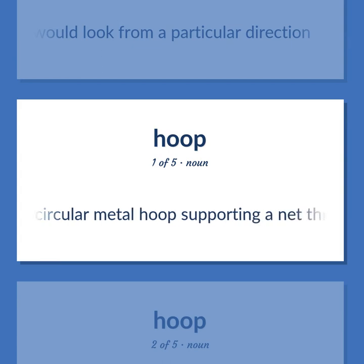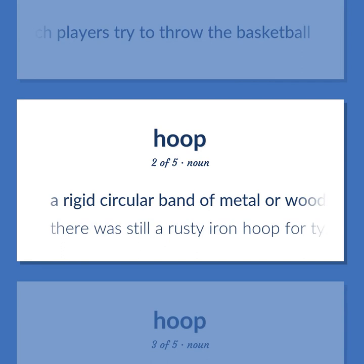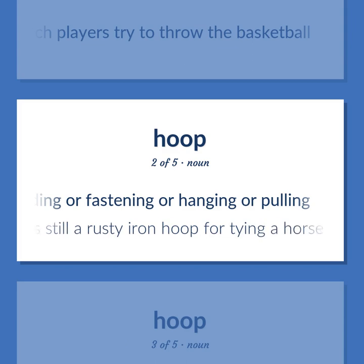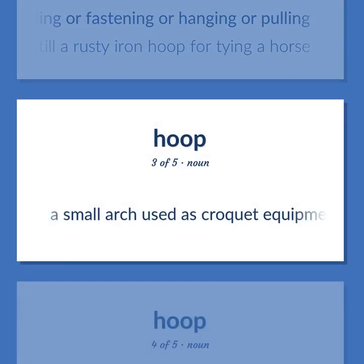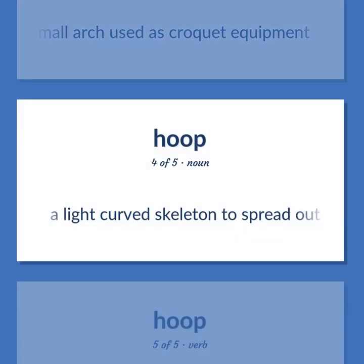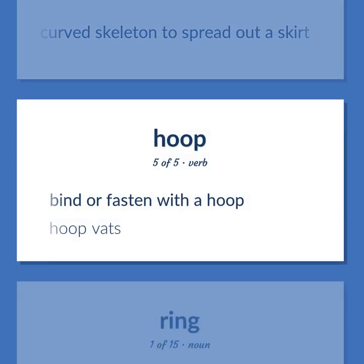HOOP: A horizontal circular metal hoop supporting a net through which players try to throw the basketball. A rigid circular band of metal or wood or other material used for holding or fastening or hanging or pulling — 'there was still a rusty iron hoop for tying a horse.' A small arch used as croquet equipment. A light curved skeleton to spread out a skirt. As a verb: bind or fasten with a hoop — 'hoop vats.'